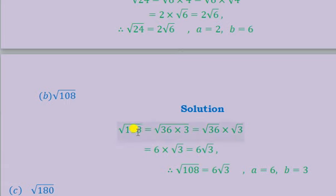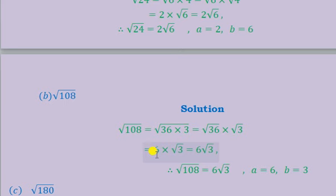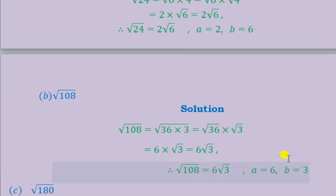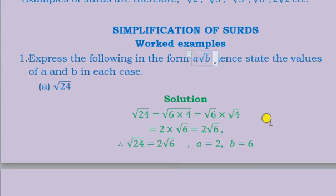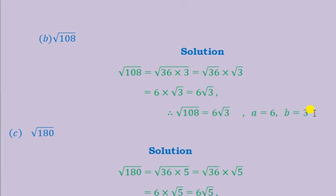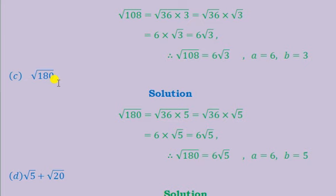For root 108, we break it into a product of a non-square number and a square number. The non-square number is 3 and the square number is 36. So this is root 36 times root 3. Root 36 is 6, and root 3 remains under the square root. We multiply 6 by the silent coefficient 1 to give us 6, so finally we conclude that root 108 equals 6 root 3, where a equals 6 and b equals 3.